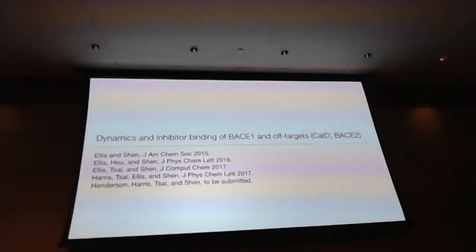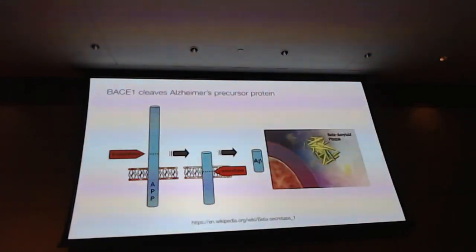So I'm going to use the example of beta-secretase, which is an enzyme involved in Alzheimer's disease. We're going to look at the dynamics of BACE1, as well as the off-targets, cathepsin D and BACE2, which are very similarly looking. And we're going to ask questions about their interactions with the inhibitor. So what is BACE1? BACE1 cleaves the Alzheimer's precursor protein from the beta site. Together with the gamma-secretase cleaving from the transmembrane site, we generate the beta-amyloid peptide, which goes on to aggregate forming fibrils and eventually plaques that are implicated in the disease.